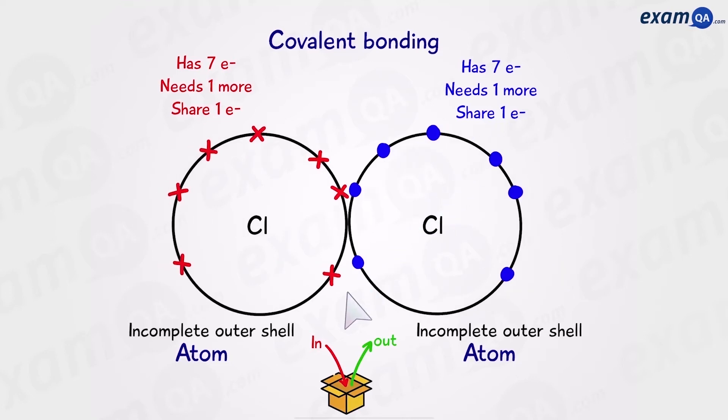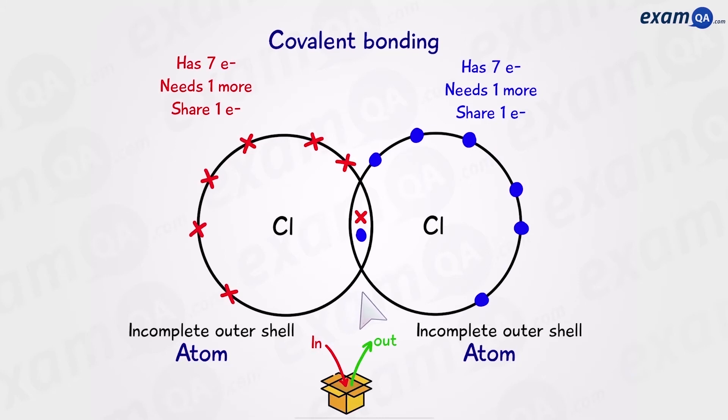So the chlorine atoms come together and we get the following. So let's count how many electrons each atom has now. Starting with the left, 1, 2, 3, 4, 5, 6, 7 and 8. And on the right, 1, 2, 3, 4, 5, 6, 7 and 8. So notice now that both atoms have 8 electrons.